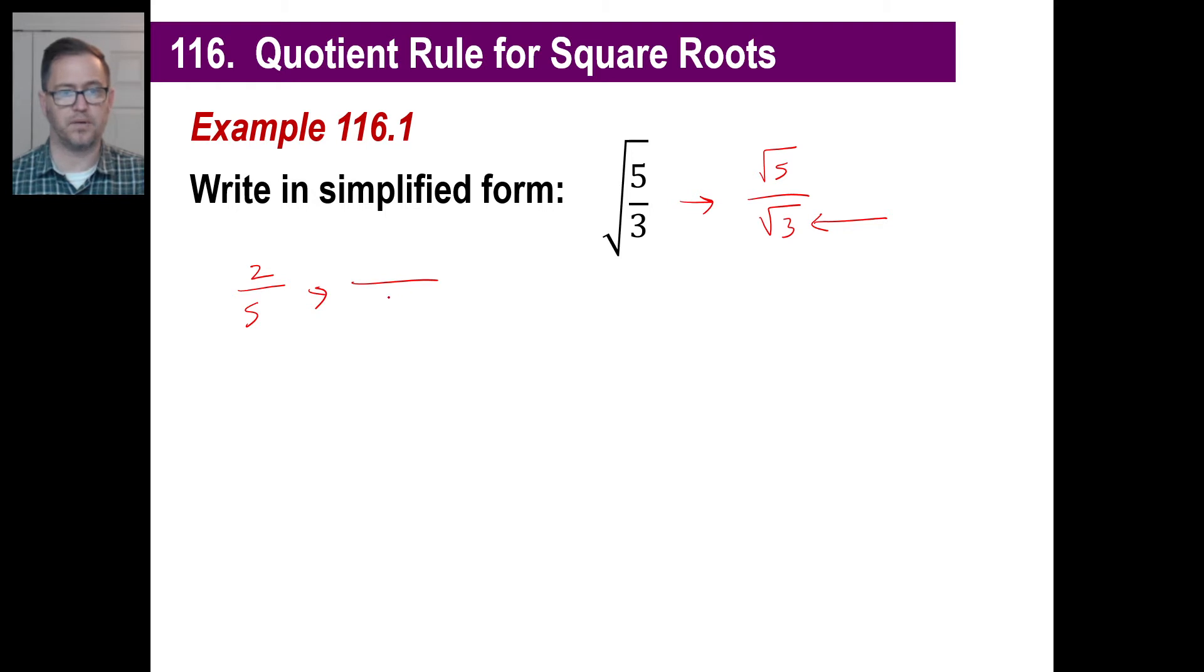So what you can do is, if you remember, on a fraction, remember how you used to do this when you were a kid? You'd go two-fifths, they'd say turn that into something with tenths as the bottom. And you went, okay, well, 5 times 2 is tenths. So I'll do 2 times 2 is 4. Because if you do something to the top of the fraction and you do the exact same thing to the bottom of the fraction, you haven't changed the fraction. You've just multiplied by 1, really, right? Because you've multiplied by 2 over 2. Well, that's just 1.